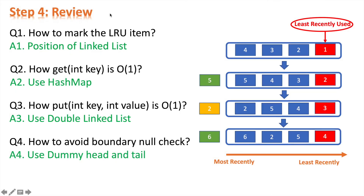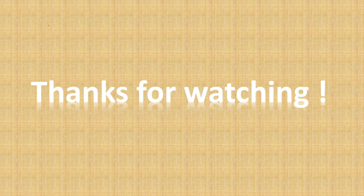Let's review the key points. First, we use the relative position of the node in the linked list to mark the LRU item — from left to right is from most recently to least recently used. Then we use a hash map to make the get function O(1), and a doubly linked list to make the put function O(1). Finally, to avoid boundary node situations, we use a dummy head and dummy tail. That's all for today — if you enjoyed the video, please give it a thumbs up and subscribe. I'm Stacy, thanks for watching!